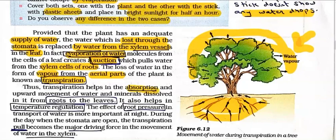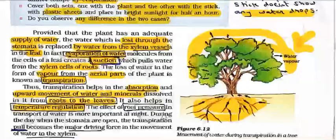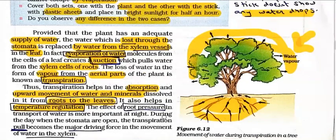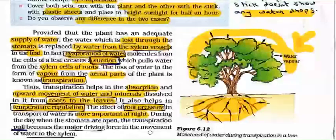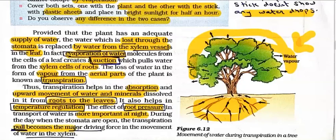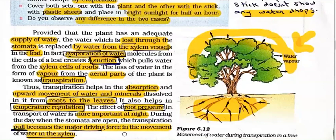The loss of water in the form of vapor from the aerial parts of the plant is known as transpiration. Transpiration helps in the absorption and upward movement of water and dissolved minerals from the roots to the leaves. It also helps in temperature regulation — just as our sweat glands regulate our temperature, transpiration does the same for plants. Root pressure is more important at night. During the day when stomata are open, the transpiration pull becomes the major driving force for water movement in the xylem. At night, stomatal pores are closed, so water is not being pulled.